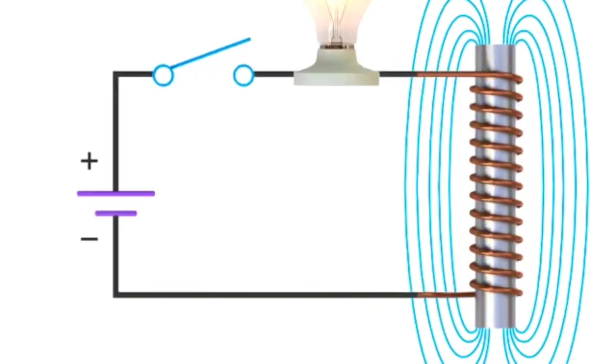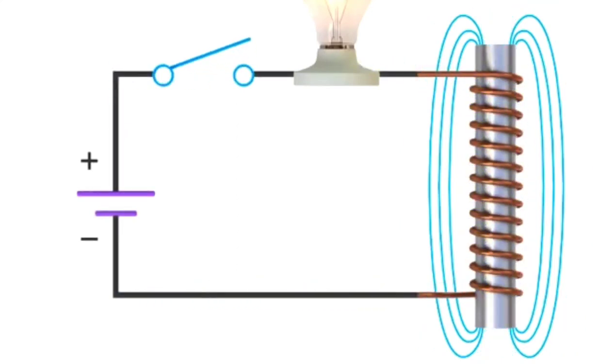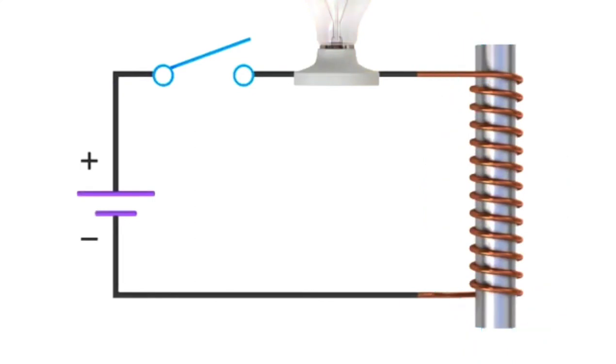If you open the switch and stop the flow of current from the source, the electromagnetic field will diminish rapidly and simultaneously release stored energy in the form of voltage. It will actually generate enough voltage to cause a spark across the switch as it opens.